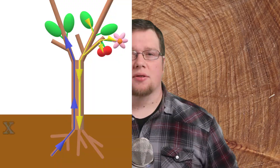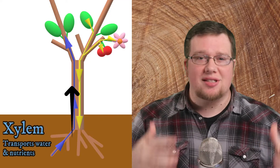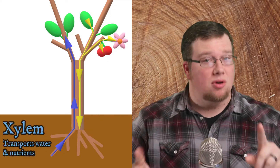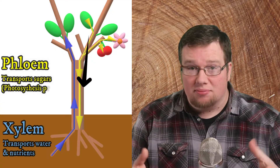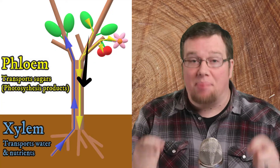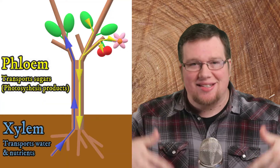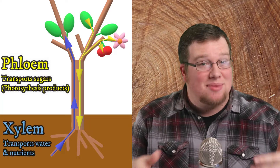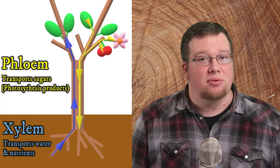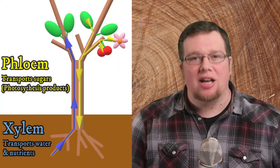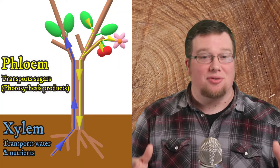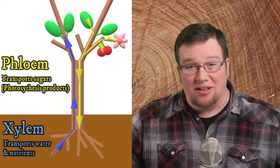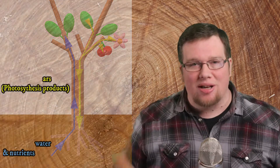Now let's talk about what xylem and phloem specifically do. Xylem transports mostly water but also some dissolved compounds from the roots to the stems and leaves. Phloem, on the other hand, transports the plant's food sugars created by photosynthesis from the leaves to the stem and roots — areas that are not photosynthetic and therefore can't create their own food. Simply put, xylem transports things up into the plant from the ground, and phloem moves things from the leaves down and out to the rest of the plant.